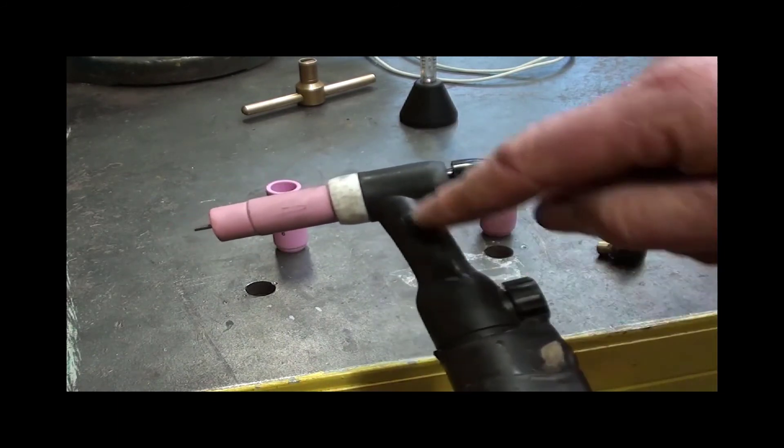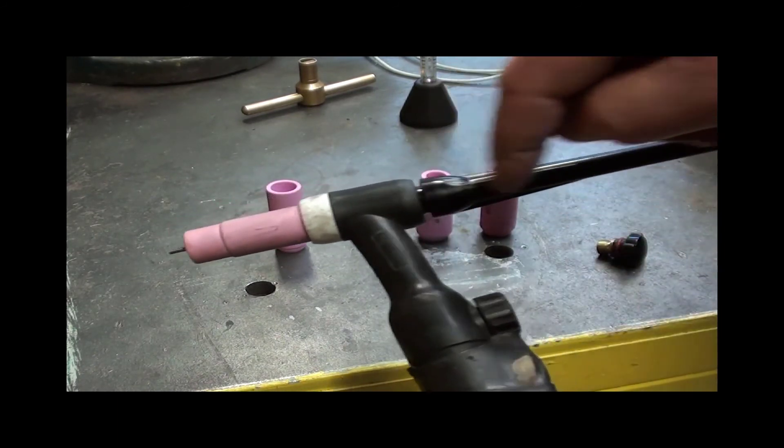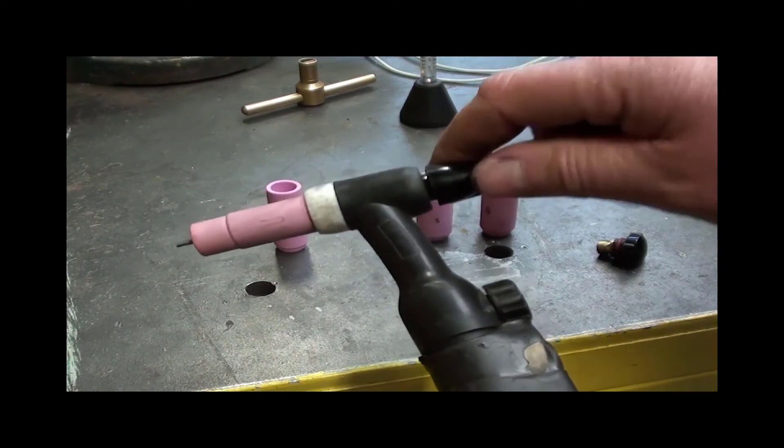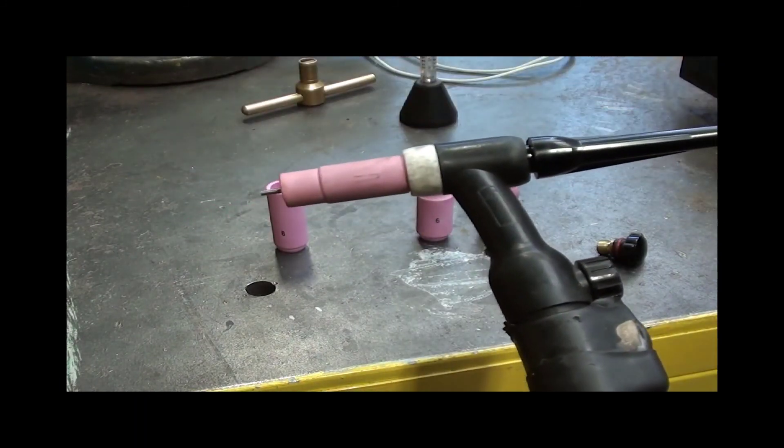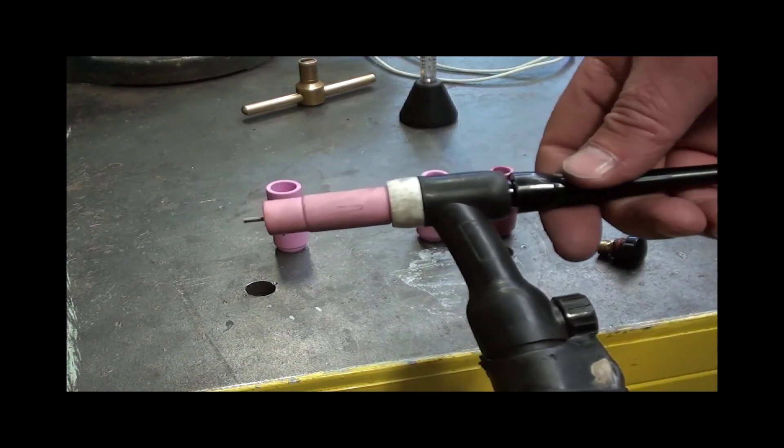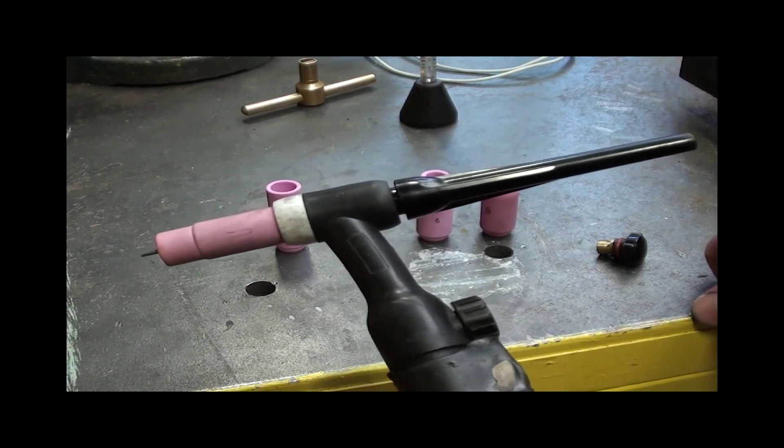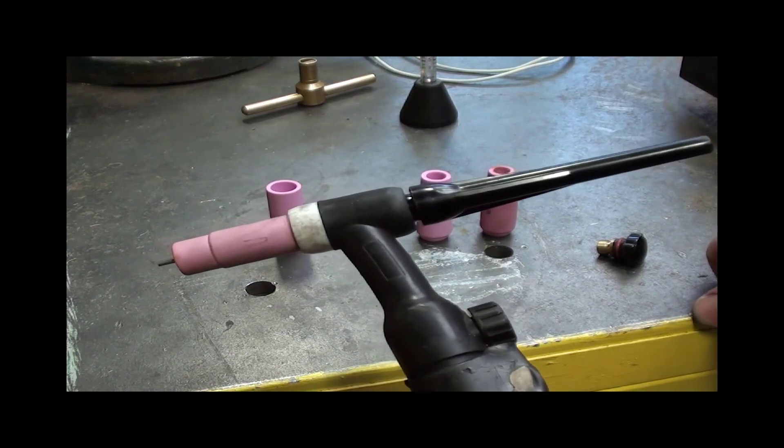So when you hit the micro switch, the gas will go into the torch. It can get into the back cap. But because you've tightened it off and the O-ring's there, the gas can only go forward. So it's going to come out the front face of the torch. So that's how you assemble a TIG torch in the welding and fabrication shop.